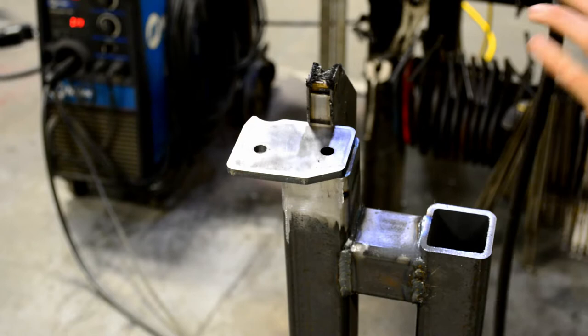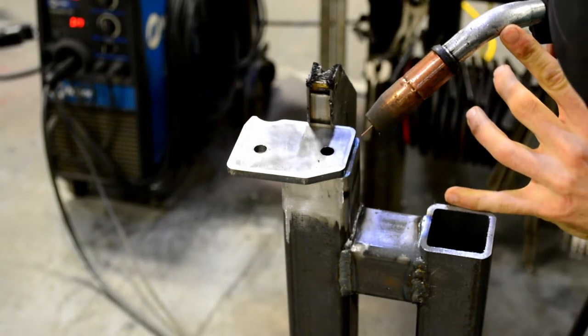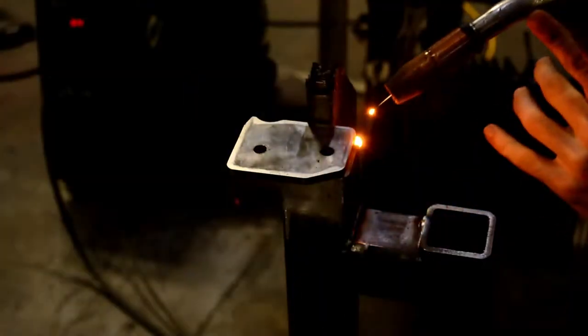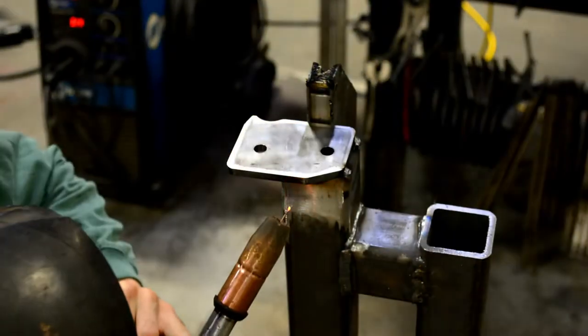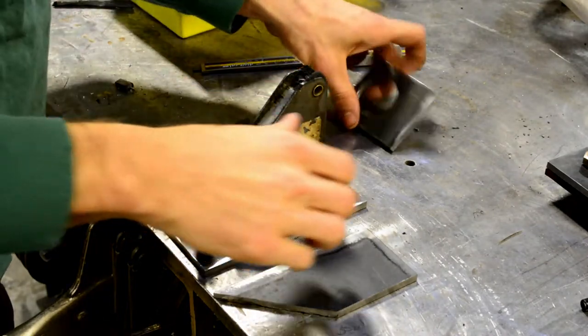To be able to test fit the swing out on the bumper, I needed the latch plate installed on the end of the swing out, but I didn't want it permanently on there. So I just threw a couple tacks on in case I needed to move it.